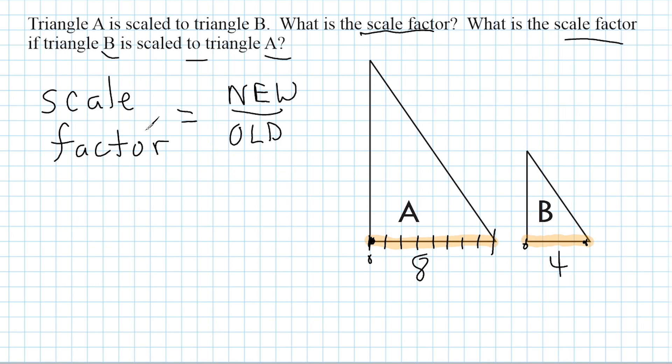So with our equation for scale factor, if we take the new measurement, which is 4, and we divide it by the old measurement, which is 8, we could reduce that fraction to 1 half. Or as a decimal, we can say we have 0.5. So the scale factor when going from A to B is 1 half or 0.5.